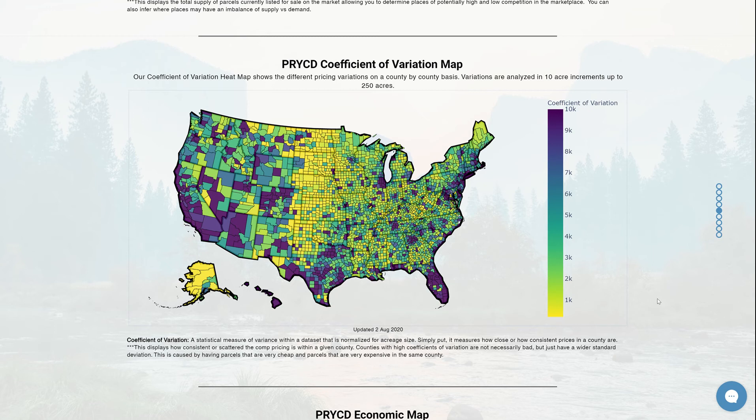When you think about coefficient of variation, I really want you to think about price comp variation. All the coefficient of variation is doing is providing us with a normalized value that we can take across all the counties in the United States, regardless of acreage range, regardless of pricing range, and rack and stack and compare and contrast.